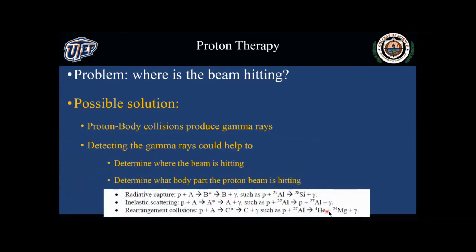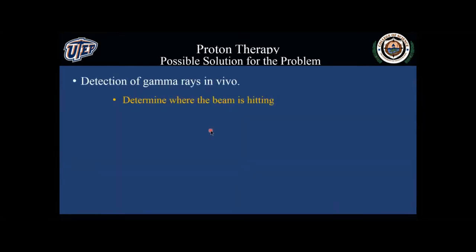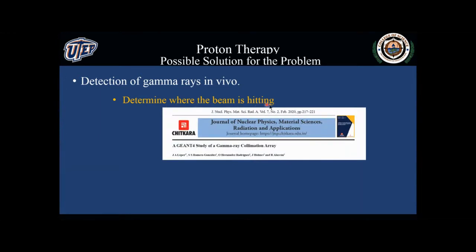These are the types of reactions that usually take place with protons. Protons can be captured, scattered, or rearranged. But there are some gammas coming out, and those are the ones we are going to be studying. This is what we did a year ago — determining where the beam is hitting — and we presented this in Tabasco at our meeting there, and it was published. We were using a collimator to capture the gamma rays and try to work the geometry backwards to see where they were being originated.